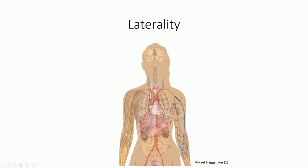Another concept you should be comfortable with is laterality. The term unilateral refers to one side of the body only, while bilateral refers to both sides of the body. This comes into play when discussing unpaired versus paired organs, respectively. The liver, for example, is an unpaired organ found unilaterally in the upper right quadrant of the abdomen, while the kidneys are bilaterally paired organs. Another pair of terms you will see from time to time are ipsilateral, meaning on the same side of the body, and contralateral, meaning on the opposite side. For example, each cerebral hemisphere controls the opposite side of the body, so damage from a stroke would result in contralateral paralysis. By contrast, severing a peripheral nerve in the arm would result in ipsilateral paralysis to the muscles that nerve supplies.